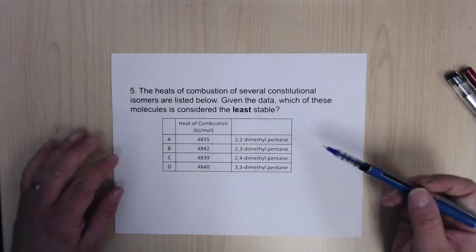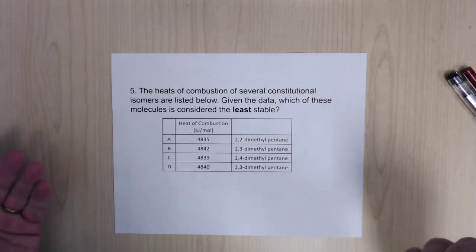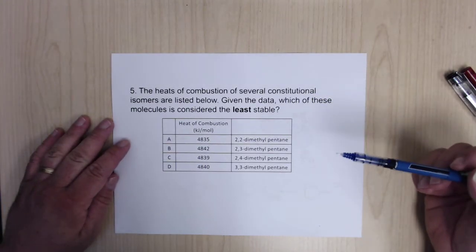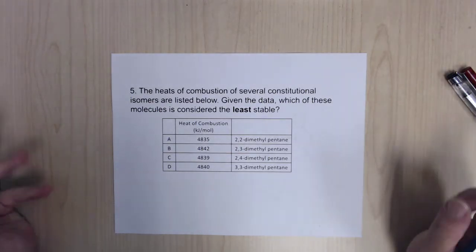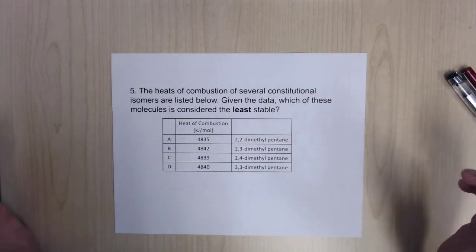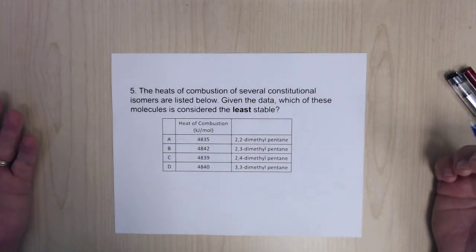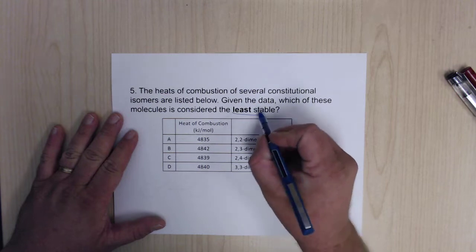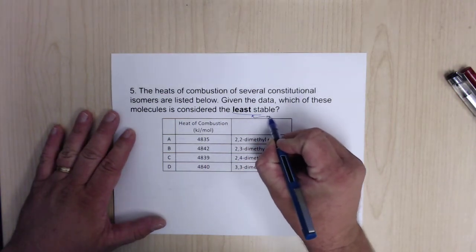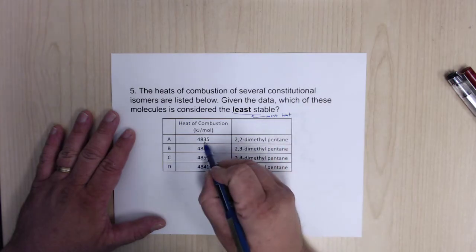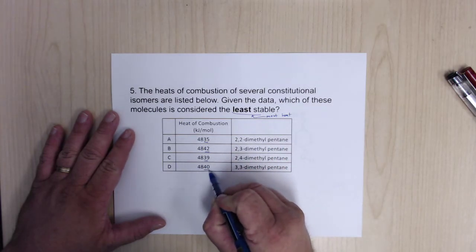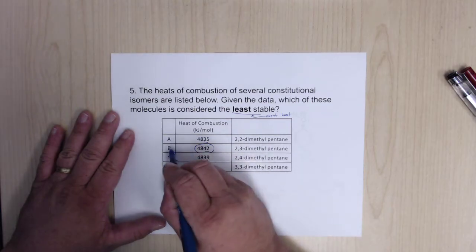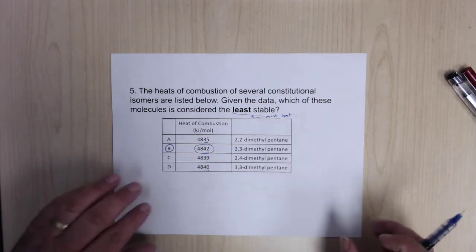For heats of combustion: the more stable the molecule, the less heat it's going to give off. I usually think about what they put in bombs — in order to give off a lot of heat, the molecule itself has to be very unstable. So lots of heat means really unstable. If you're looking for the least stable molecule, look for the most heat of combustion. All are C4H8 isomers, and the one giving off the most heat is the least stable.